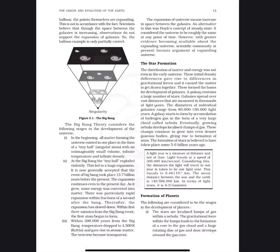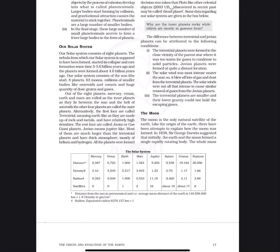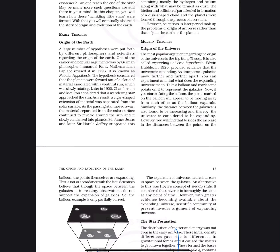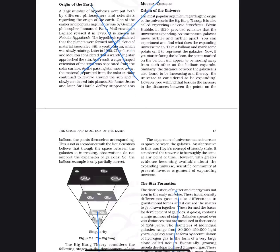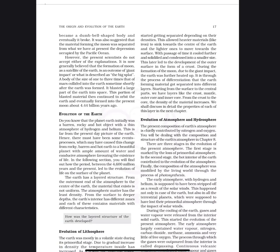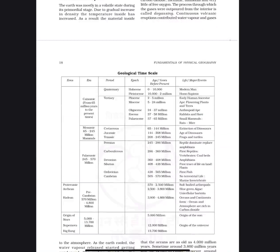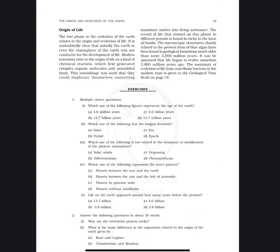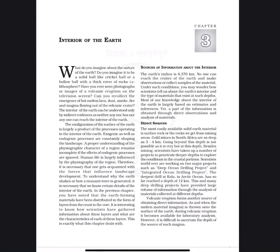The next chapter is the Origin and Evolution of Earth. This chapter is important from a CAPF perspective — topics like our solar system might have a question. You can skip the Big Bang theories. Start directly from our solar system, the moon, evolution of earth, evolution of atmosphere, and hydrosphere. There was one question in the CAPF exam regarding eras like the Pre-Cambrian era or Palaeozoic era, but you can skip those if you want.